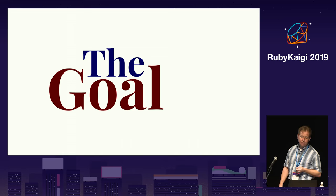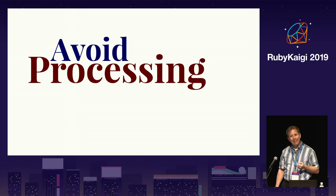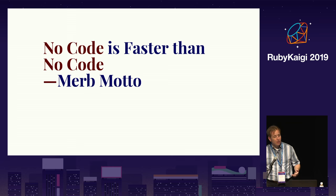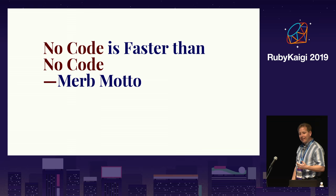The first optimization principle is that the fastest code is usually the code that does the least. If you want fast code, avoid unnecessary processing during performance sensitive code paths. An old Ruby web framework named MIRB had a great model related to this: no code is faster than no code. In other words, if you can get the same result without executing any code, any approach that requires executing code will be slower. A major reason Sequel and Roda are faster than the alternatives is that they try to execute less code, at least by default.